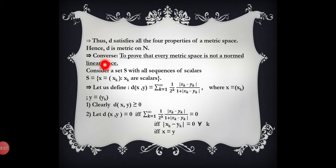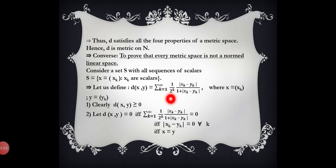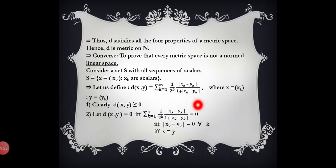Now to prove the converse part of the theorem, we consider the sequence space s, where s = {x = (x_k) : x_k are scalars}. We define the function d(x, y) = Σ(k=1 to ∞) [1/2^k · |x_k − y_k| / (1 + |x_k − y_k|)], where x = (x_k) and y = (y_k). We will first prove that d is a metric on s, meaning it satisfies all four properties.